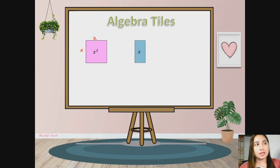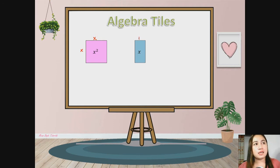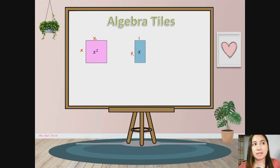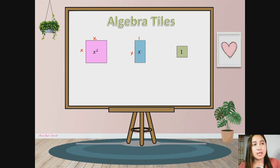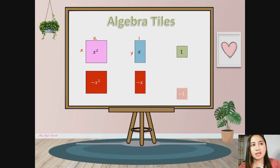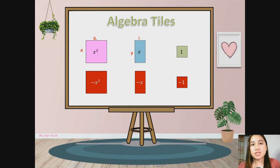Then we have the x-tile. For the x-tile, the length of this side right here is 1, and this side is x. So the area of this tile is 1 times x. This tile represents our x-tile. We also have a tile that represents positive 1, and we have negative x-square, the negative x-tile, and the negative 1 tile. These tiles will be used later on as we proceed to our discussion.